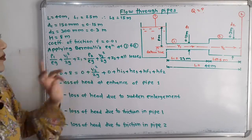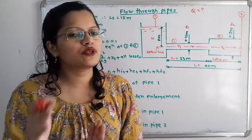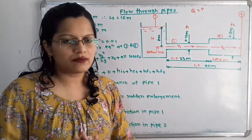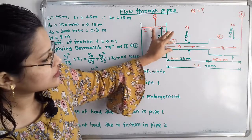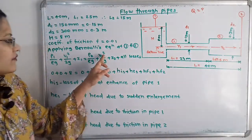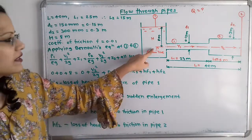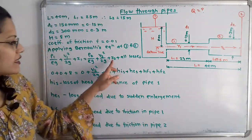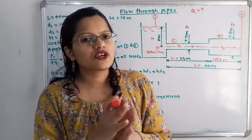Moving to section 2, which is the outlet of the pipe — the pipe outlet is open to atmosphere, so P2/ρg is zero. However, because the cross-section area of the pipe is much smaller than the tank, the velocity is increased, so we must retain V2²/2g. The datum head Z2 at the pipe center is zero. We now need to consider both major and minor losses.